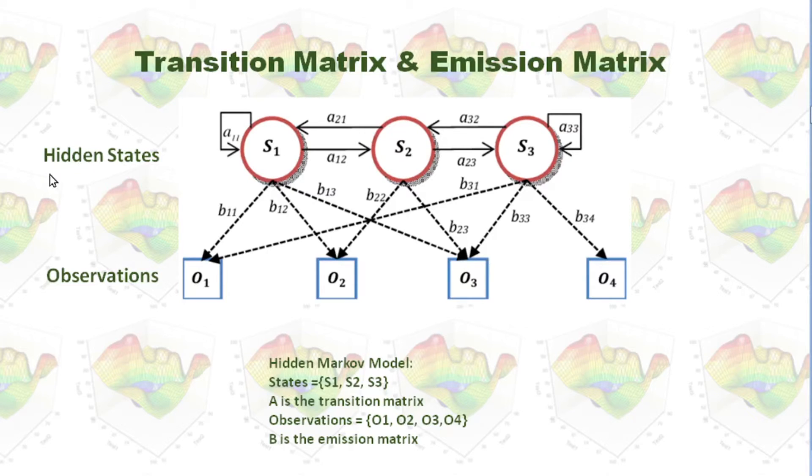Between hidden states and observations, we can also use another matrix. We call it emission matrix. That means certain hidden states can cause certain observations.